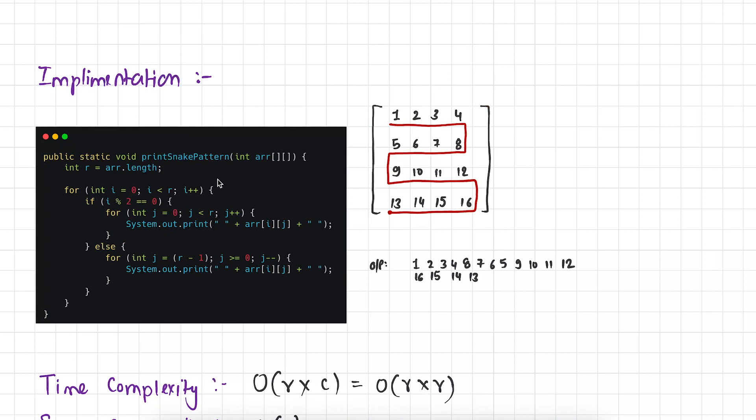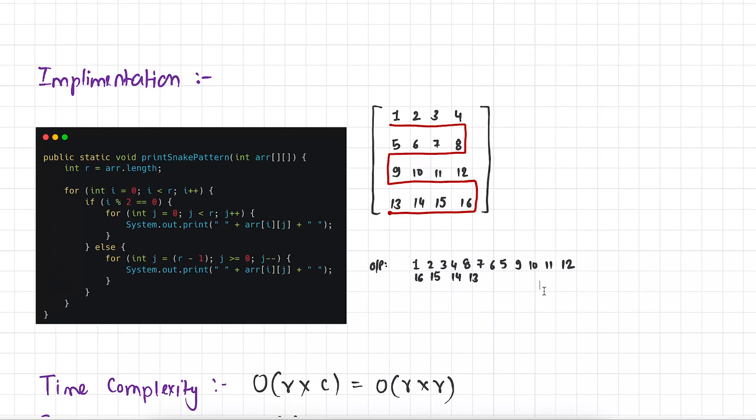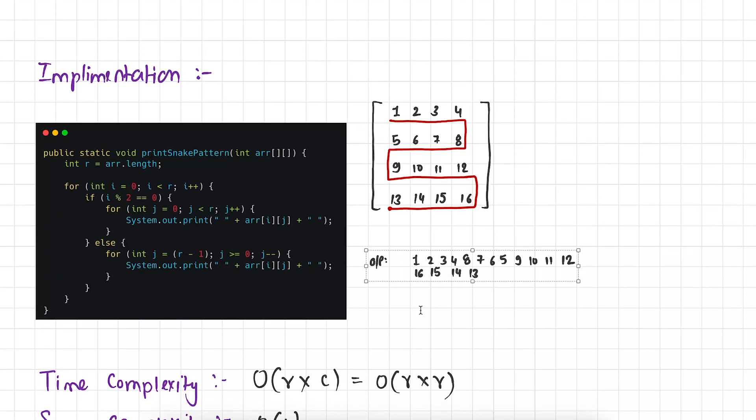And if we execute this function on this matrix we would get output like this: 1, 2, 3, 4, 8, 7, 6, 5, 9, 10, 11, 12, 16, 15, 14, and 13. And as you can see that this is exactly same as snake pattern. So far so great.